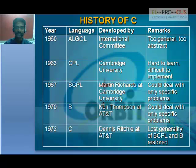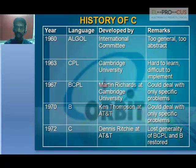Because of all these shortcomings, Dennis Ritchie thought of introducing a new programming language which could overcome all these issues, and this happened in the year 1972 at AT&T Bell Laboratories.